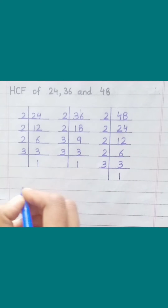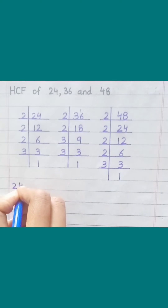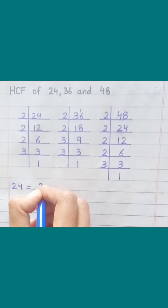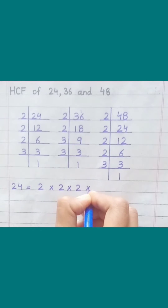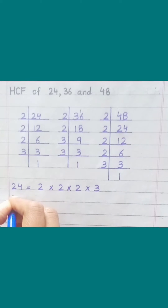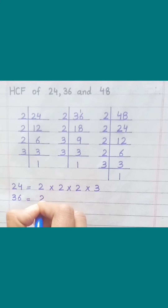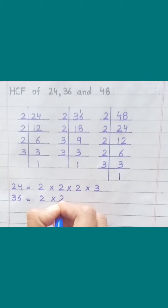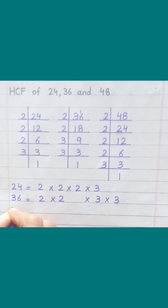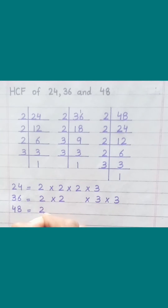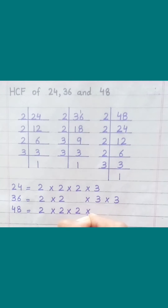24 equals 2 multiply 2 multiply 2 multiply 3. 36 equals 2 multiply 2 multiply 3 multiply 3. 48 equals 2 multiply 2 multiply 2 multiply 3 multiply 2.